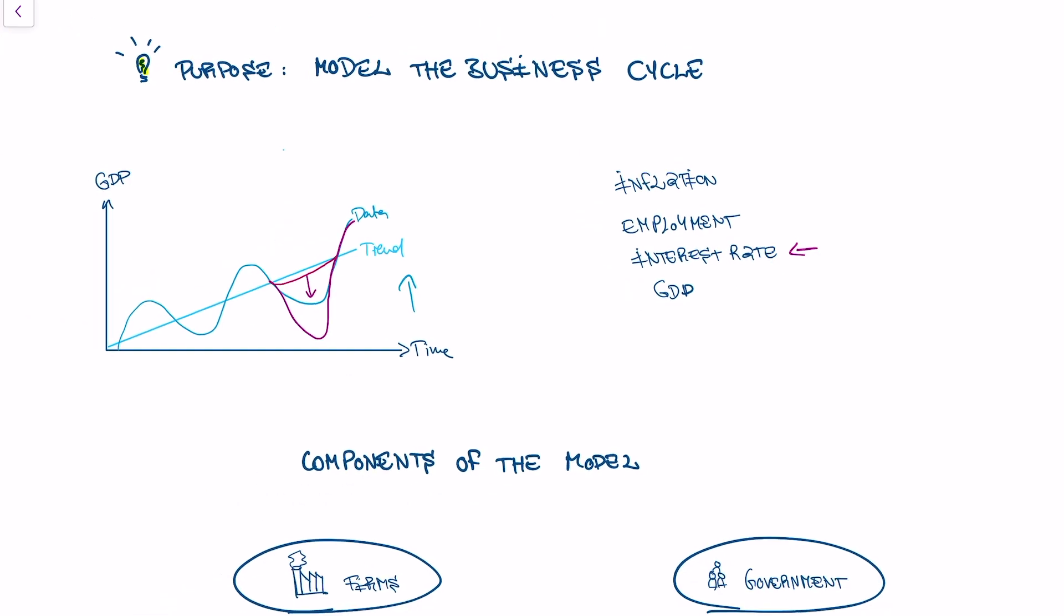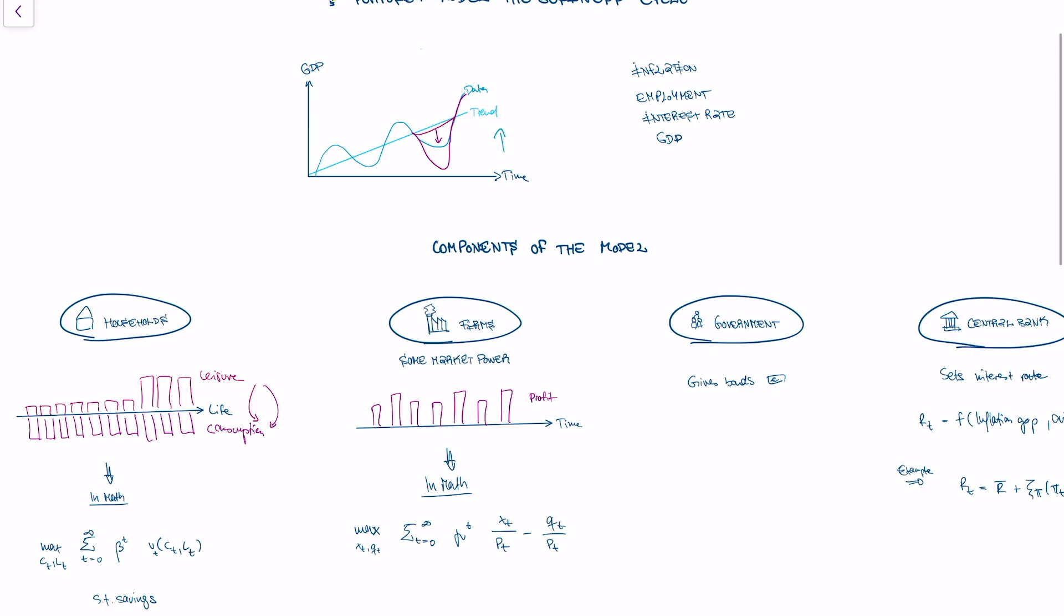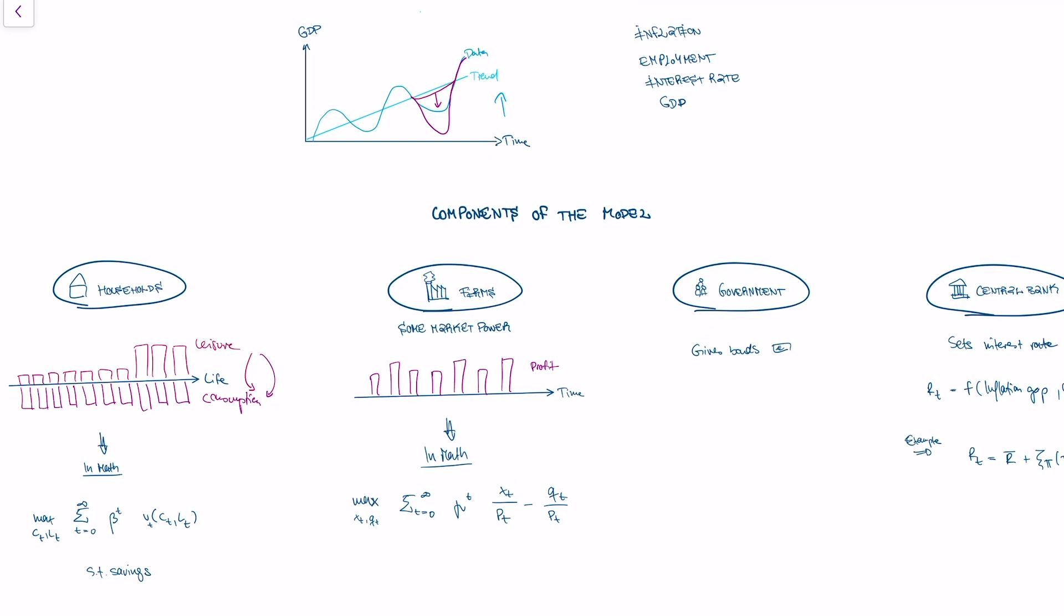The New Keynesian model relates all of those variables together. It tells us if we change interest rates, what actually happens to employment and inflation. In order to answer this question, the model has four components or thinks about four actors, agents in the economy that play a major role.